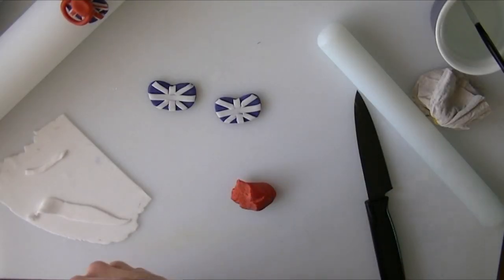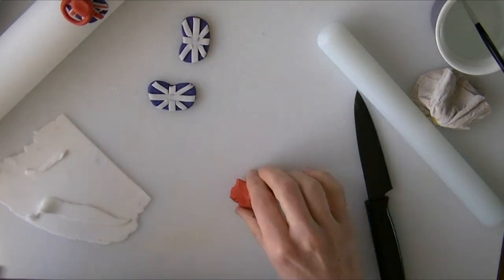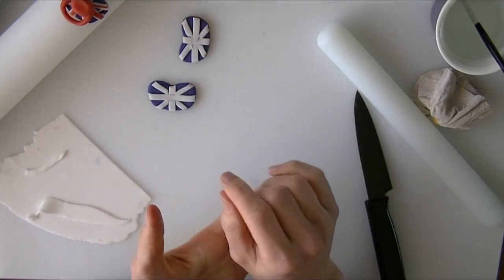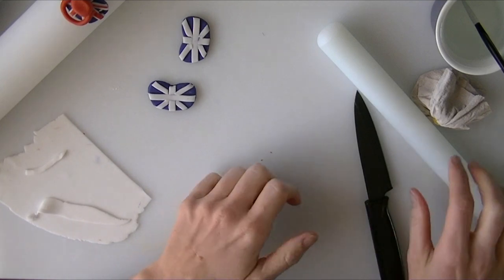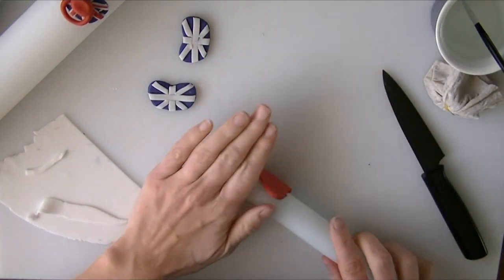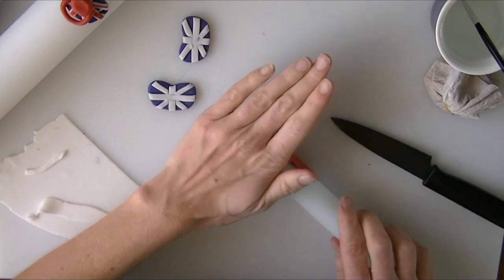I'm just taking a bit of the red fondant now. We're going to roll it thin in exactly the same way we've done with the white. We're going to cut strips, but we're going to cut them a little bit thinner this time.